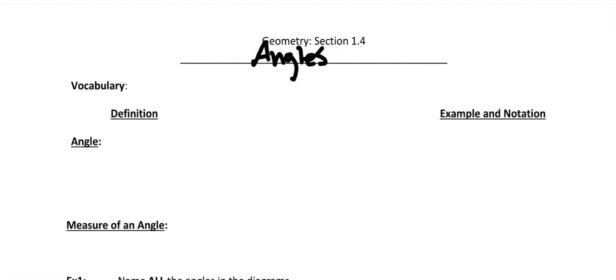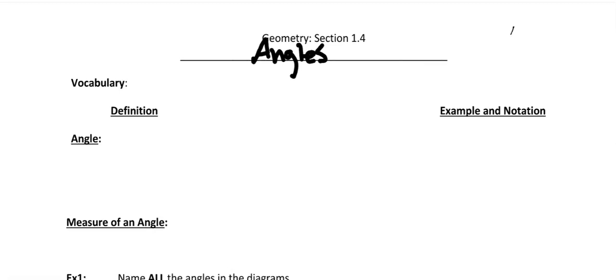We know that we started out with points, and points were basically the element that we made lines and line segments out of. So now what we're going to do is draw a picture and try to figure out how we could describe an angle. So you get an A there, B here, C there. So how could we talk about this object using the terms we already came up with?